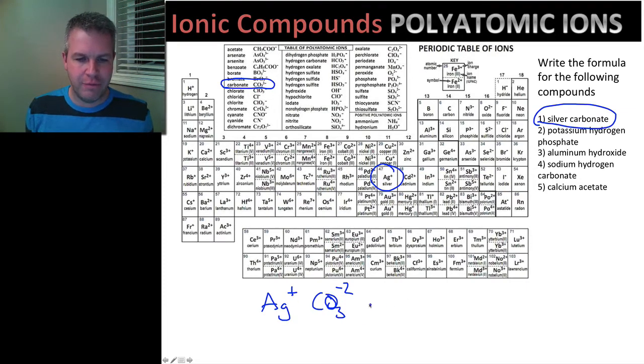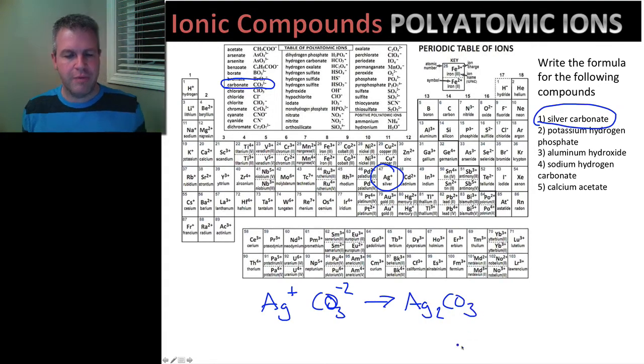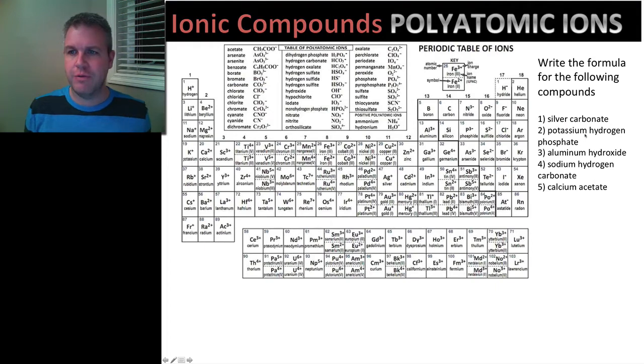So again, when we carry on we're going to know that we need two positive charges to balance out the two negative charges. So it's going to be Ag2CO3. And we don't need any brackets. We're going to get to brackets in some of the examples that we have further down. But we're not going to use brackets to begin with here. So Ag2CO3. Alright, let's move on to number two.